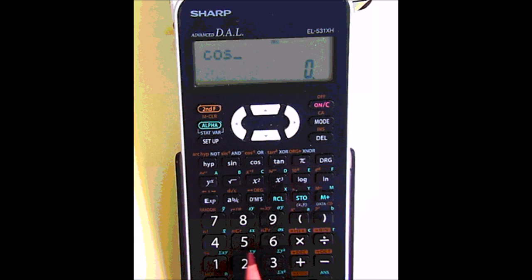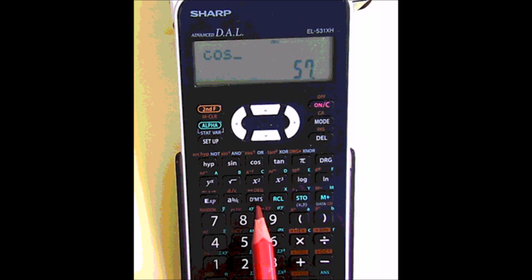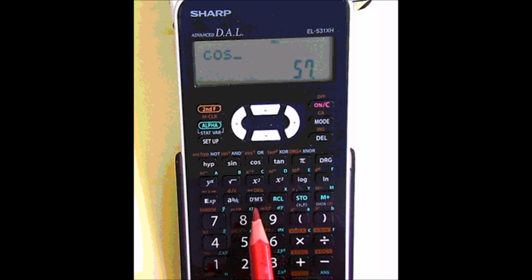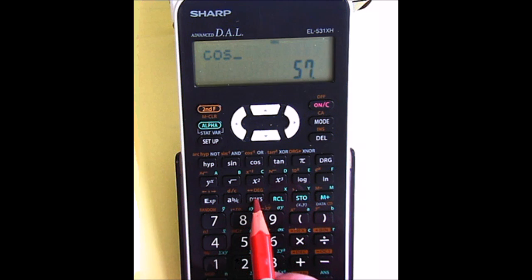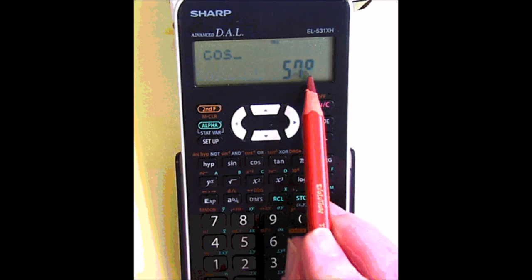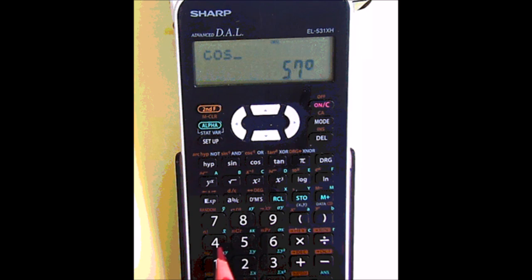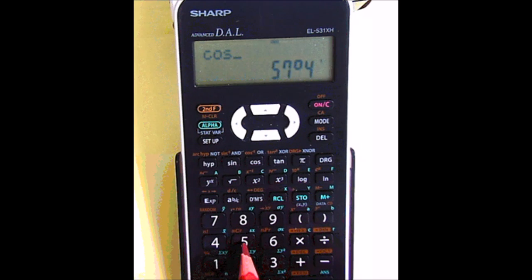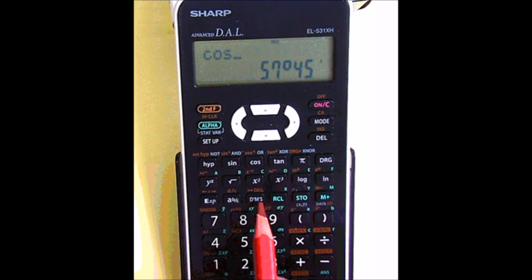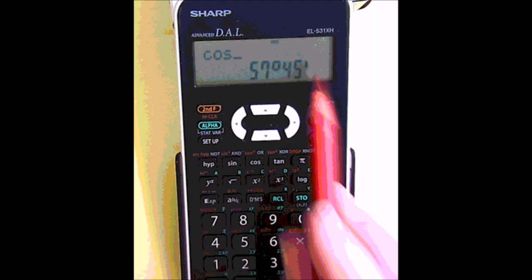I press cosine then 57. Now I've got my DMS button here, which is degrees, minutes, and seconds. If I press that, I now have 57 degrees. Now I said 45 minutes, so I click on the 45 then hit that button again. Then we have minutes.